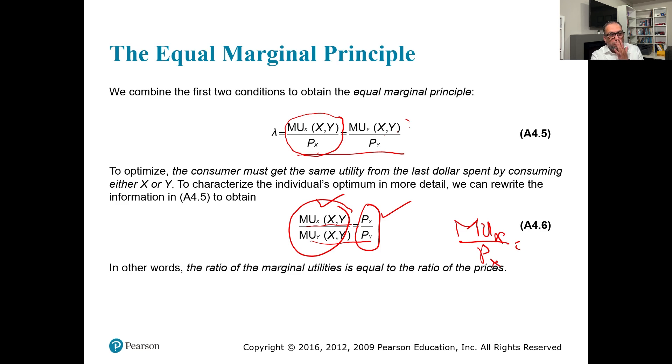This is how we apply the Lagrangian function: set φ = utility function − λ × budget constraint, differentiate with respect to x, y, and λ, then equate each derivative to zero to find the values of x, y, and λ. We will discuss the Lagrangian function in more detail in coming chapters for production and cost minimization. For practice, you can do the learning activity and weekly assignment to apply this method.